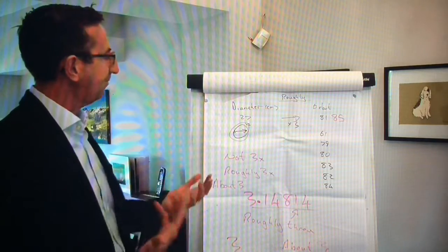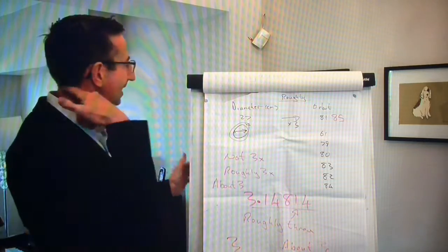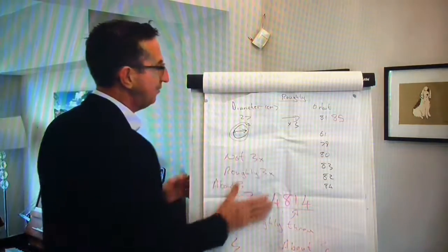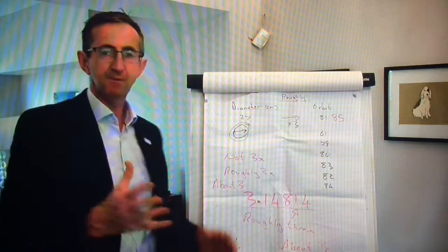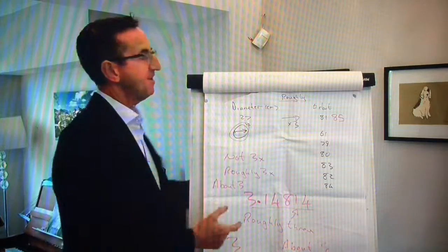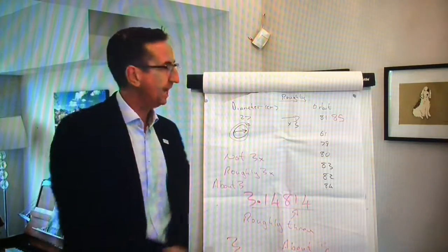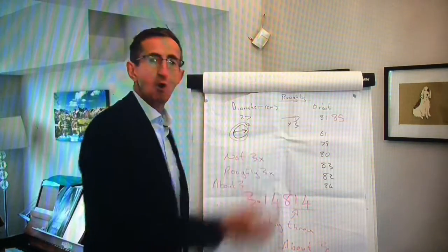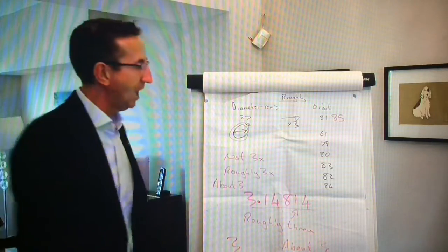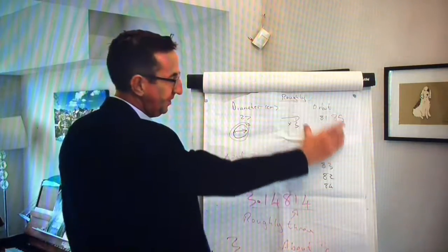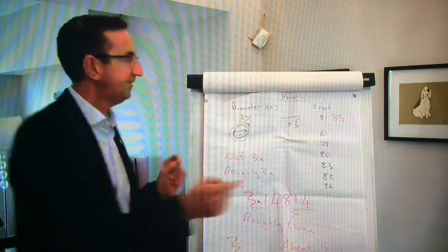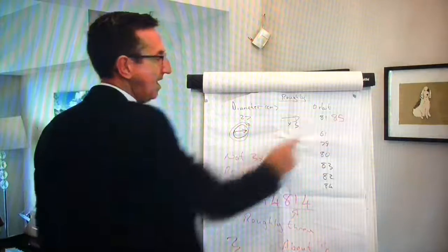So I found a big hoop where the diameter was 27. I said, okay, predict the orbit — predict the circumference. We had all of these predictions, and then I measured it and said, oh, it's 85.